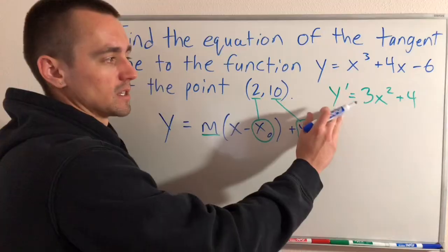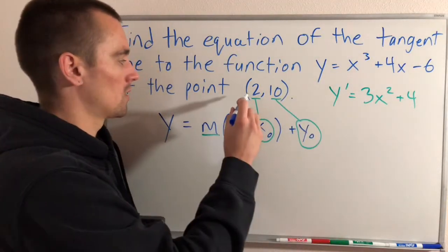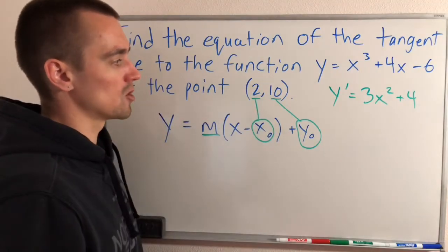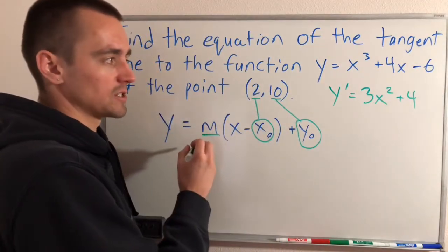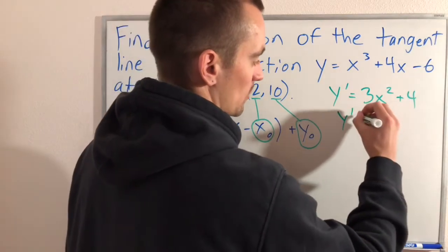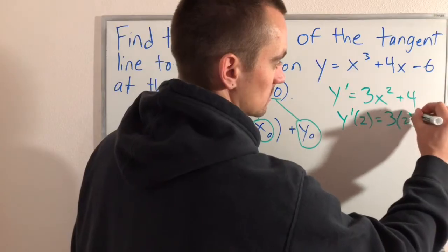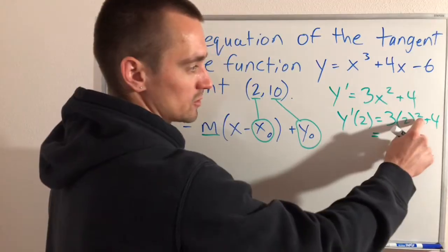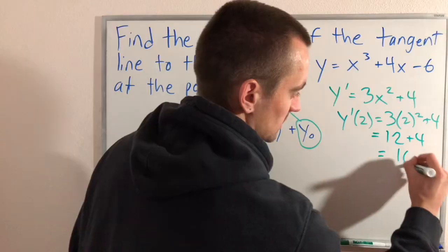This derivative tells us the slope of our function for any given x value. If we want the slope at the point (2, 10), we're looking at the slope when x = 2. To find the slope of this tangent line, we plug in 2 for x. So y'(2) = 3(2²) + 4. This gives us our slope: 2² = 4, times 3 is 12, plus 4, which is 16.